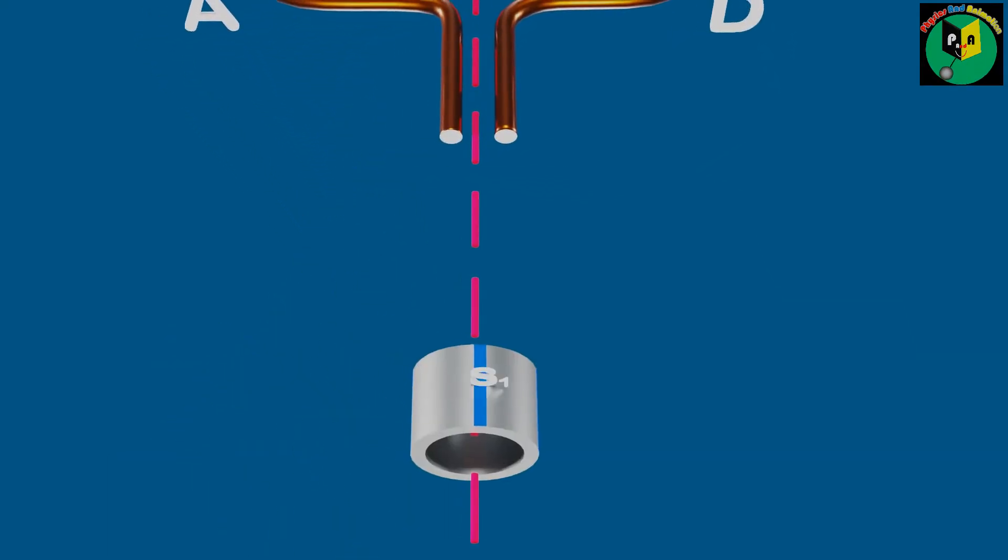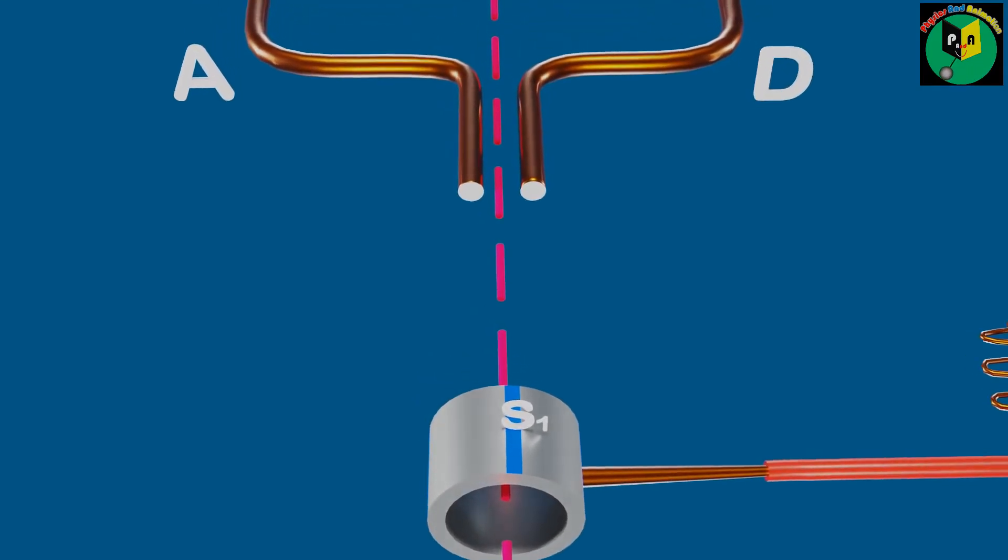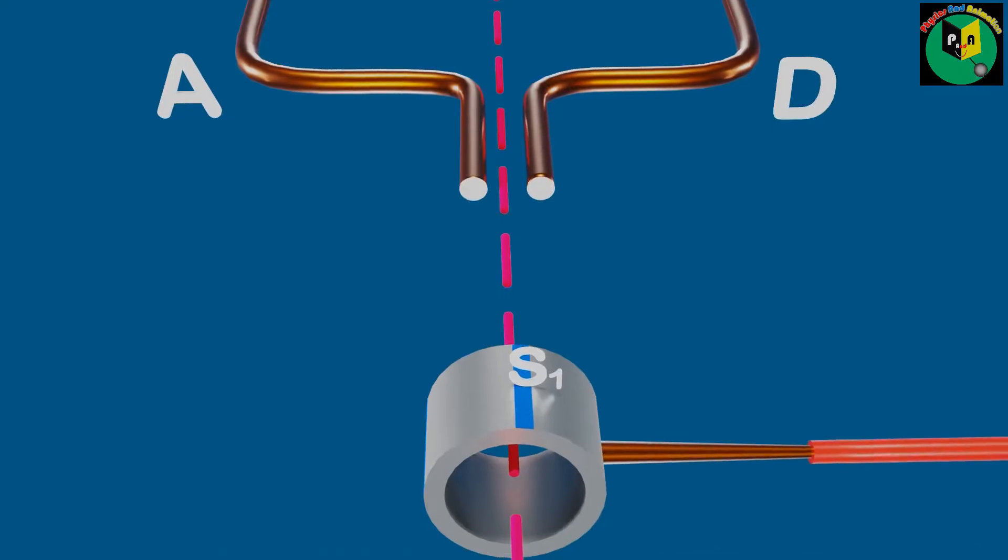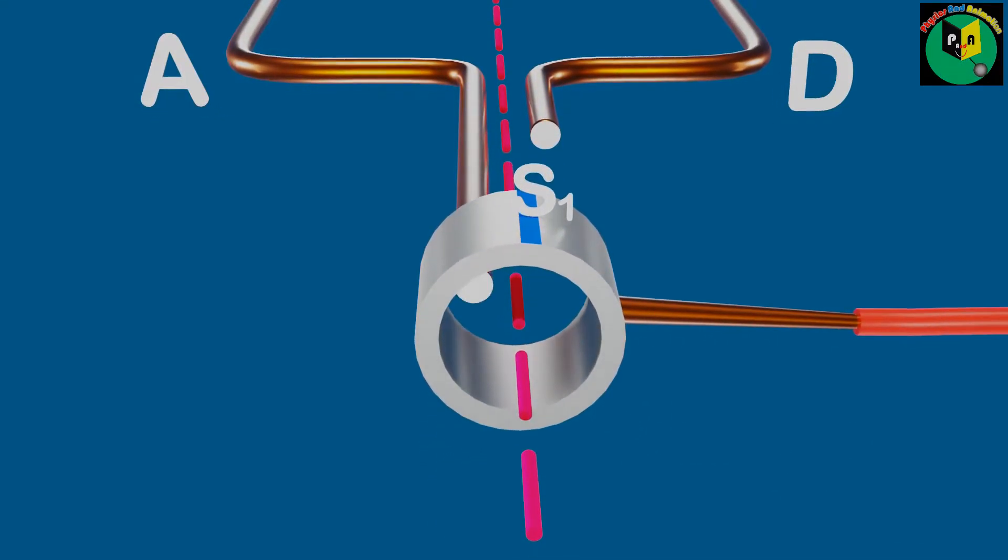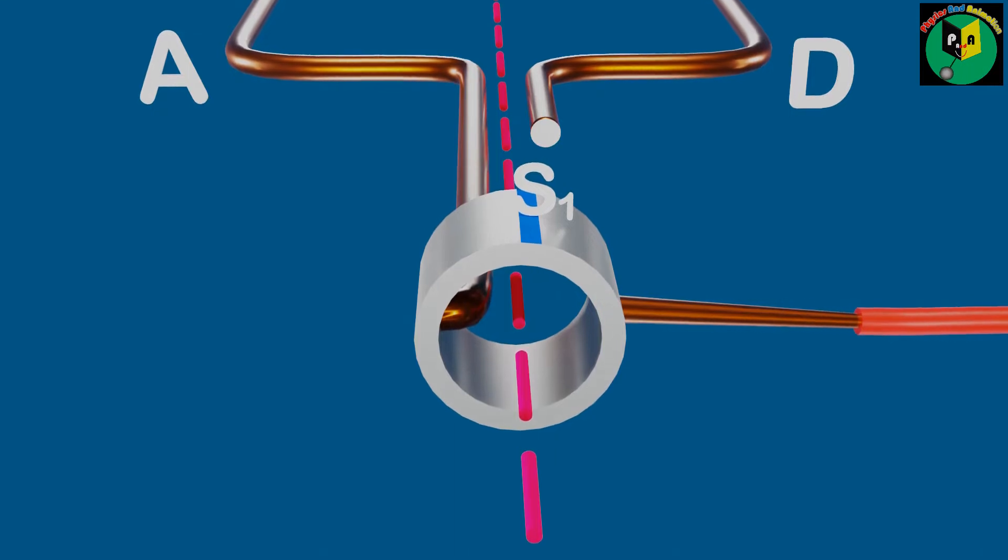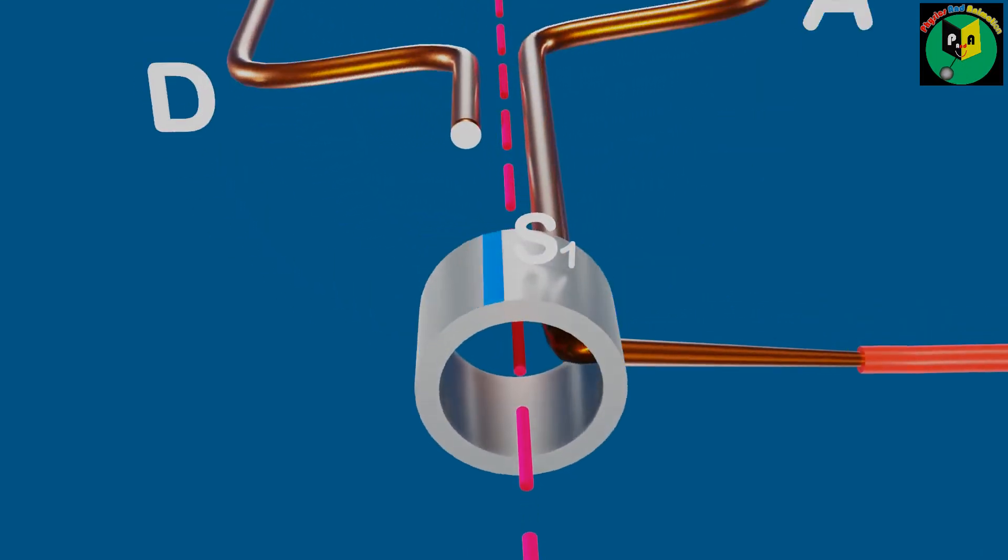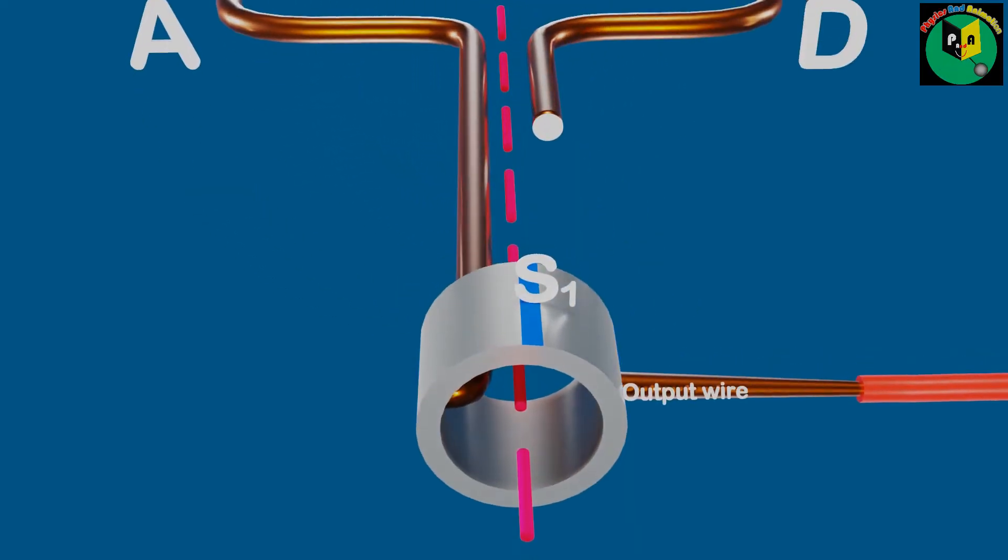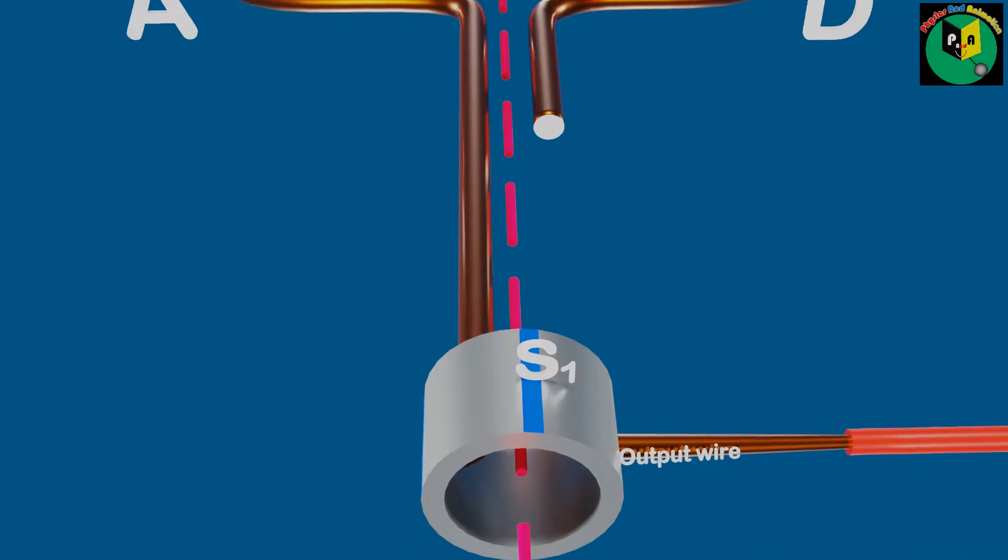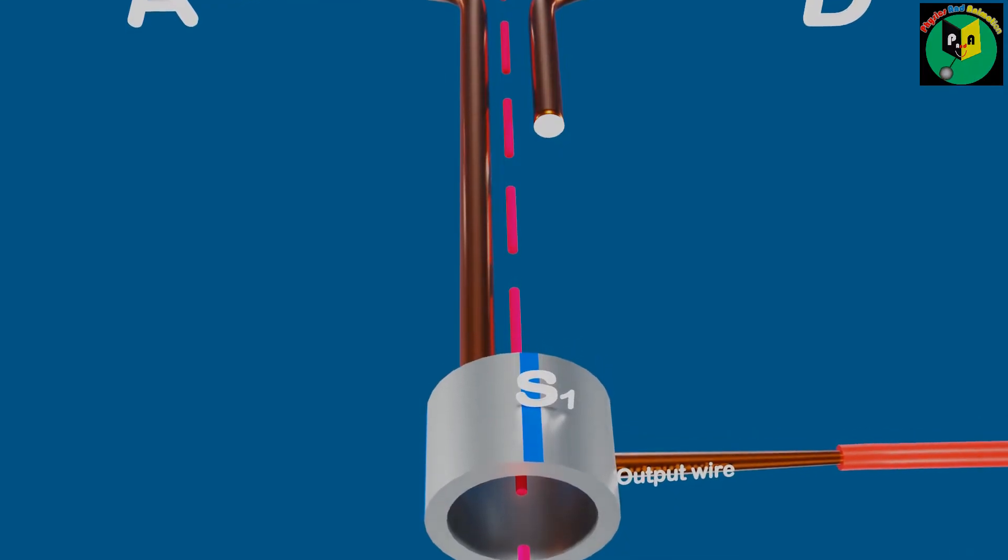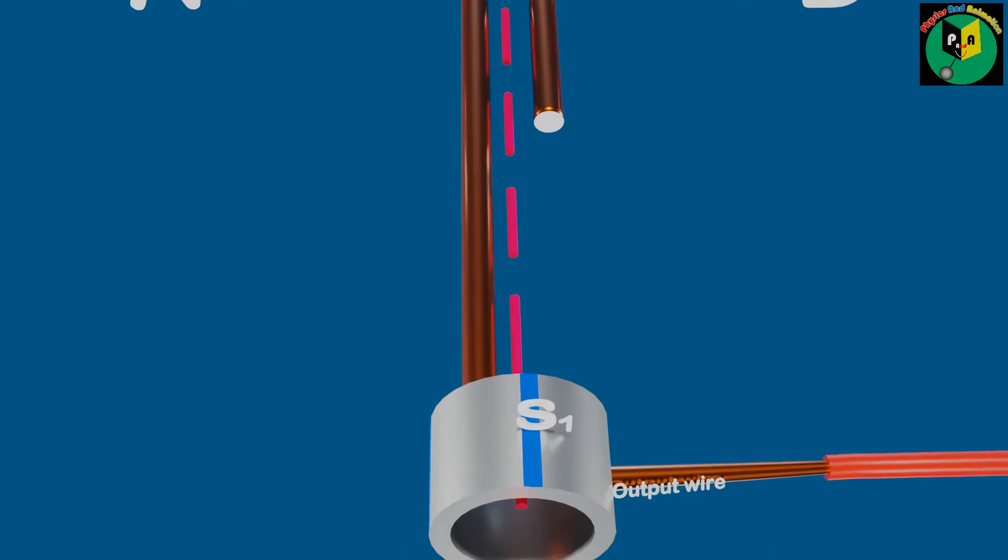We use a slip ring S1 which ensures continuous contact of the output circuit wire with the arm AB of the coil. Because now the arm AB is in touch with the slip ring S1, therefore if we rotate the coil, slip ring also rotates while the output circuit wire slips over the slip ring and will ensure continuous contact of the output circuit wire with the arm AB of the coil without any twisting.